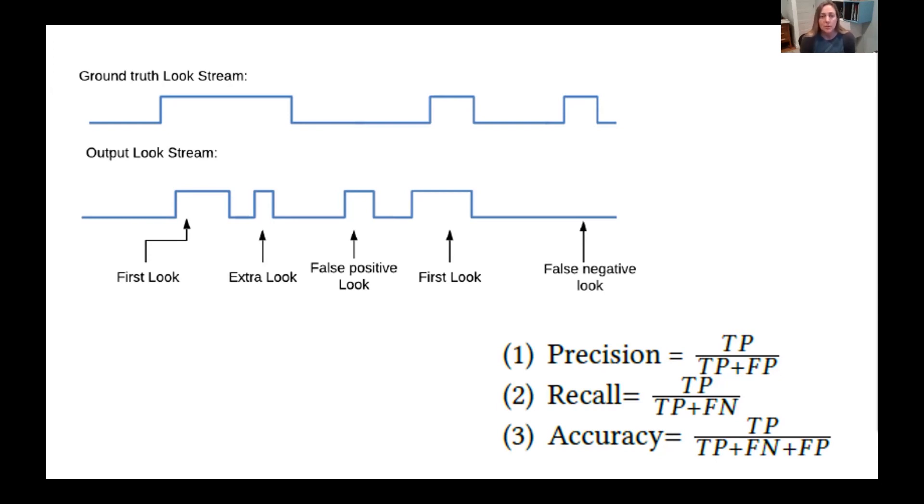For example, a false positive, shown here, is where the system deviated. It found a look where the human did not. And a false negative is where the algorithm fails to detect a look where the human expert did identify a look.